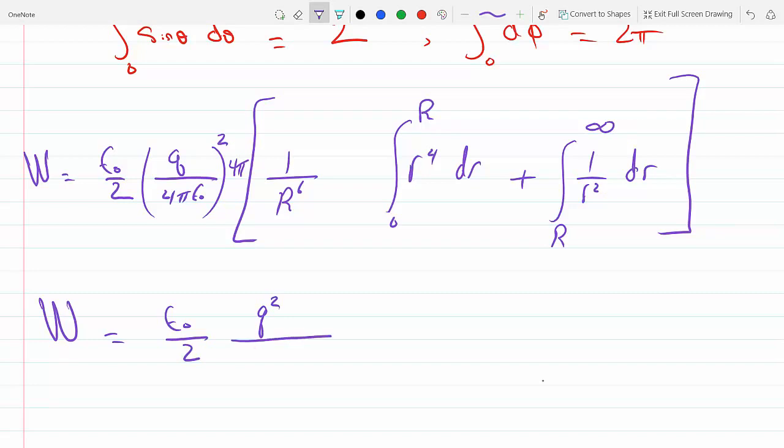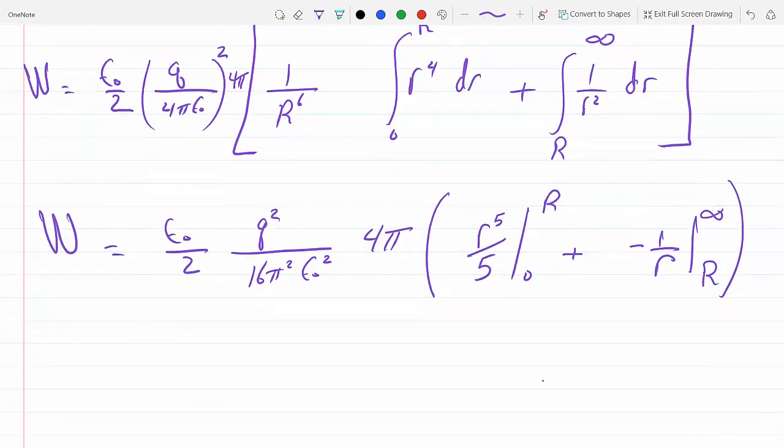So let's simplify this. This becomes epsilon_0 over 2, Q² over 16π² ε_0² times 4π. One cancels out, π cancels out 4 and 4, so I have an 8ε_0 and a π.